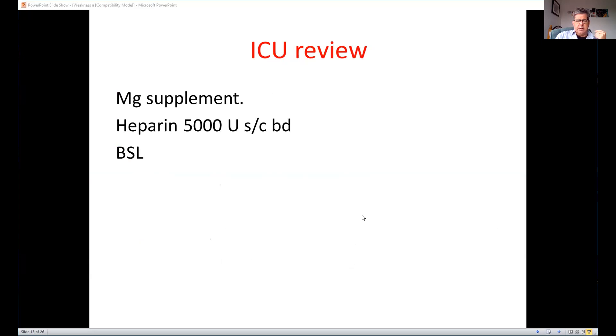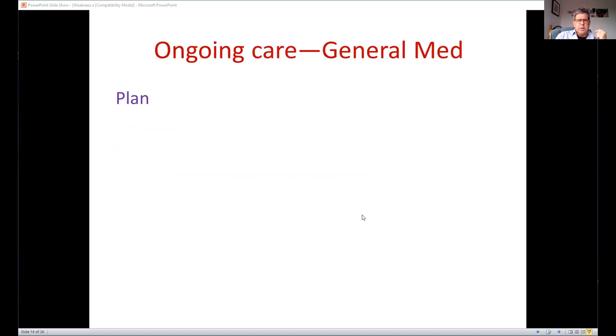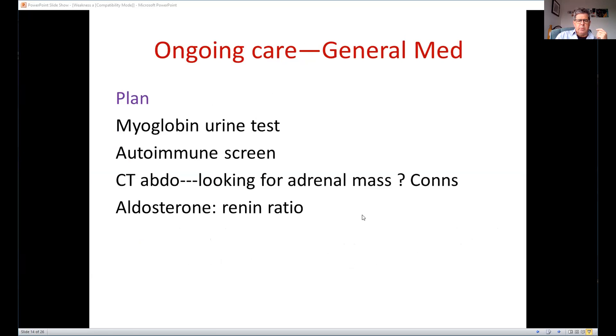ICU said add some magnesium, nothing additional. General medicine did that autoimmune screen and said, well, let's do a CT of the abdomen because if they think they've got primary hyperaldosteronism, which we'll speak about a bit further, they should look for adrenal mass, which is what Conn's syndrome is. And they should get an aldosterone to renin ratio.